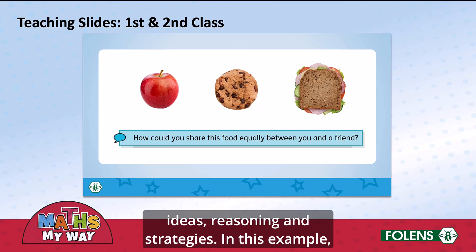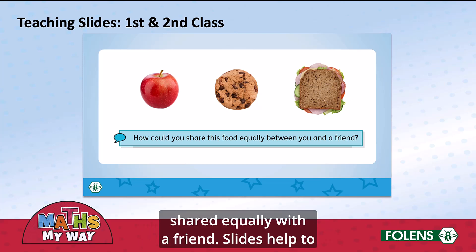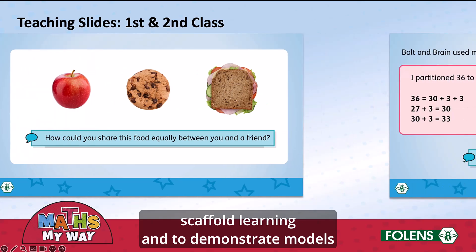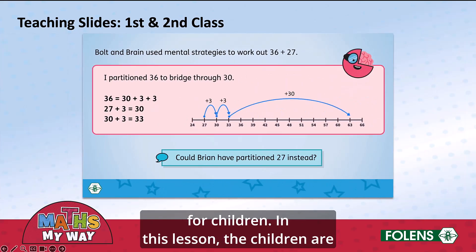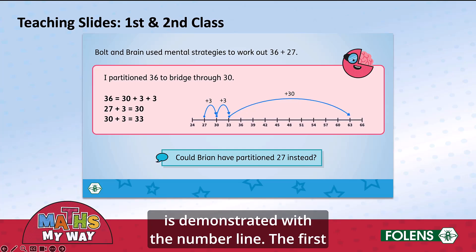In this example, students are asked to consider how food could be shared equally with a friend. Slides help to scaffold learning and to demonstrate models for children. In this lesson, the children are adding 36 and 27, and the strategy of partitioning is demonstrated with the number line.